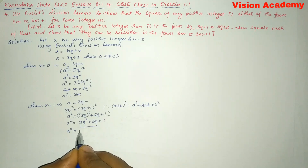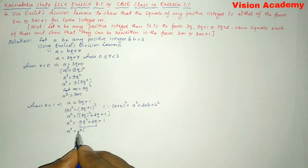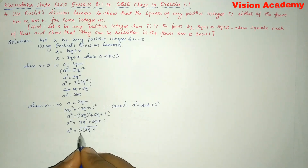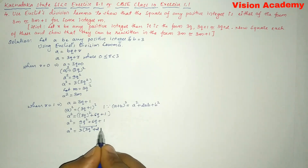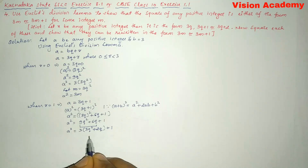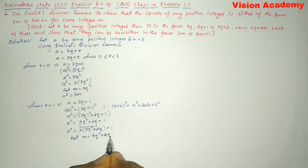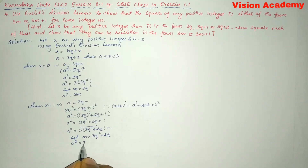Now let us take 3 as common from the first two terms. We get A squared equal to 3 into 3Q squared plus 2Q, plus 1. Let M equal to 3Q squared plus 2Q. Then A squared is equal to 3M plus 1.